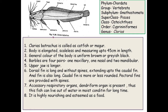The last example today is Clarias batrachus from Cypriniformes. This fish has four pairs of barbels and is therefore commonly called the catfish. Classification: Phylum Chordata, Group Vertebrata, Subphylum Gnathostomata, Superclass Pisces, Class Osteichthyes, Order Cypriniformes, Genus Clarias batrachus.